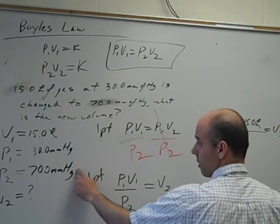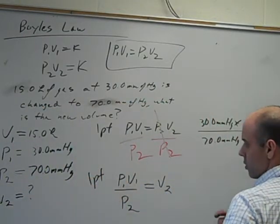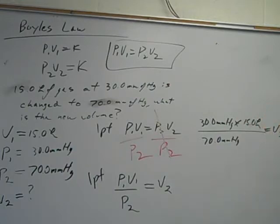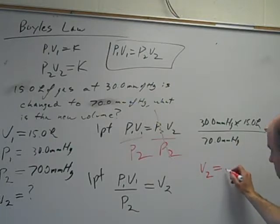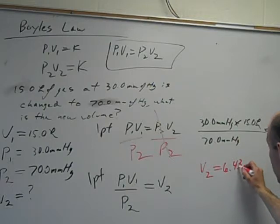So the pressure's going up, so my volume better go down. So let's see if it does. And I've got three sig figs, so my answer's going to be three sig figs. 6.43 liters.